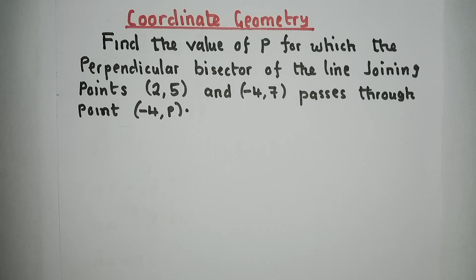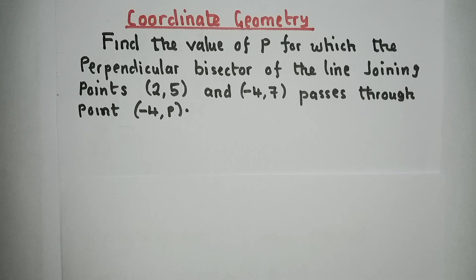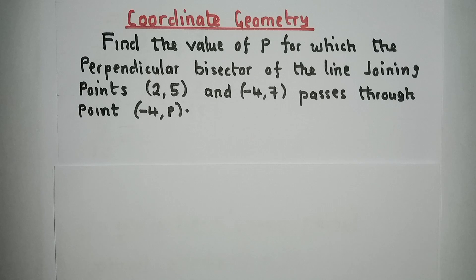In this video, our discussion will be on this exam question — this is additional mathematics. Find the value of P for which the perpendicular bisector of the line joining points (2, 5) and (-4, 7) passes through point (-4, P).